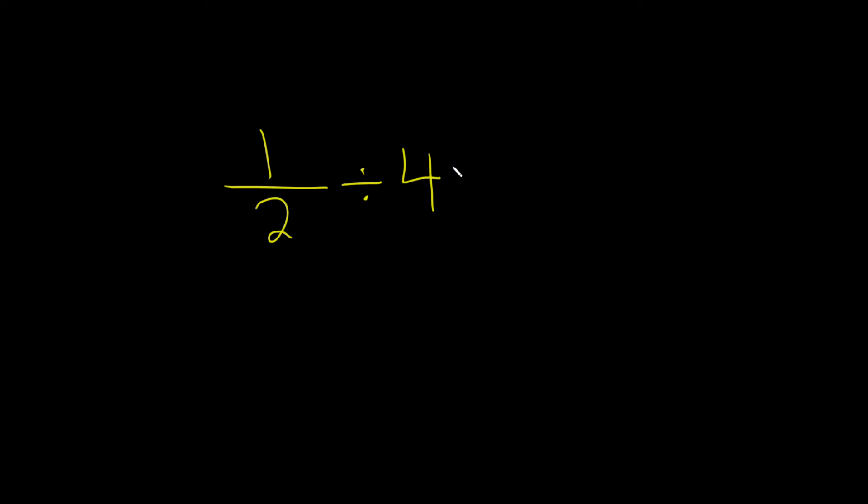However, in this case we have a whole number. So even before we change this to multiplication, we should rewrite the 4 as a fraction. We can do that as follows: This is 1 over 2 divided by, and then you can always just write a whole number over 1. And so now it's become a fraction.